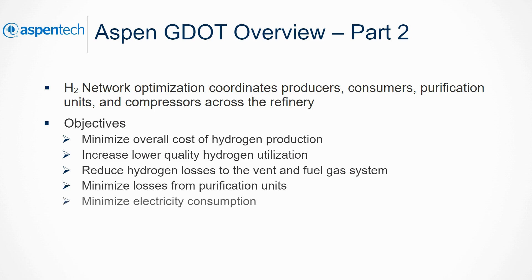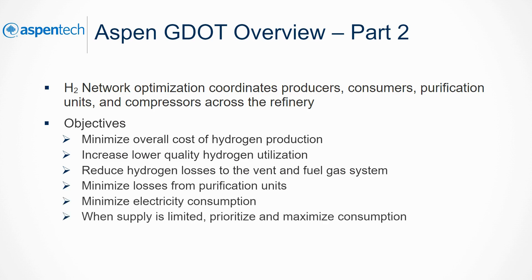GDOT also minimizes electricity consumption and, when supply is limited, prioritizes and maximizes consumption subject to availability. Benefits of this application are a 50% reduction of hydrogen losses to flare, vents, and fuel gas, and a 2–5% increase of throughput of hydrogen consumers when hydrogen supply is tight.